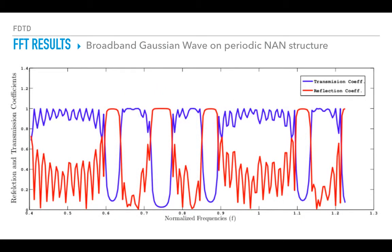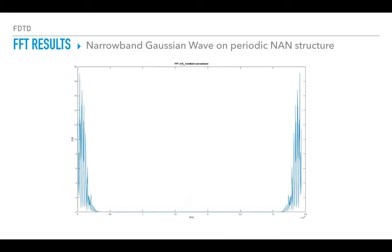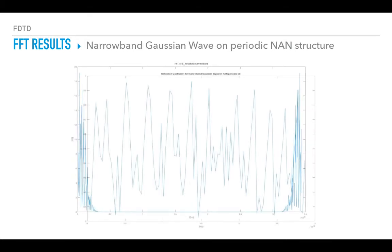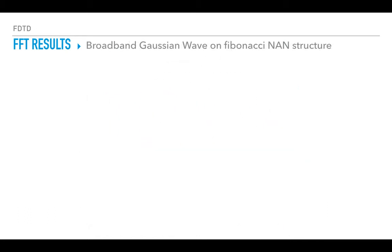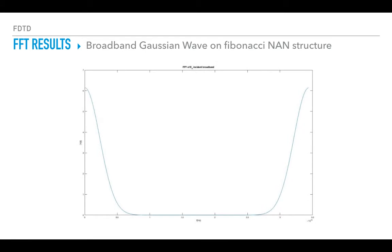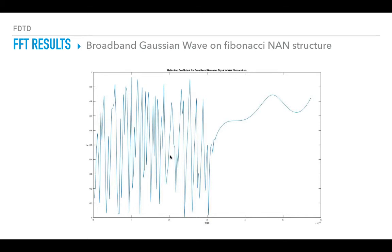Now we are comparing it with the FPM structure — this part coincides with what I found in FDTD. This is the narrowband Gaussian wave EZ total on the periodic NAN structure and its reflection coefficient. Now looking at the broadband Gaussian wave on the Fibonacci NAN structure: we have the FFT of EZ total and the reflection coefficient for the broadband case.